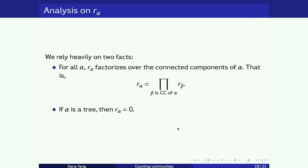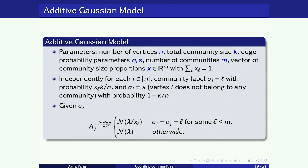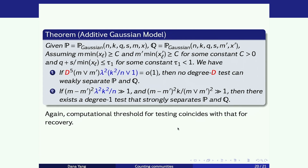We are trying to understand exactly what independence structure in our model assumption enables these two facts, hoping to make this a more general proof framework. We can also get similar results under the Gaussian model: with planted Gaussians instead of Bernoullis, the same message holds — testing multiple versus multiple planted communities shares the same threshold as recovering all members of the communities.